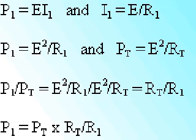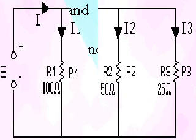We can determine the relationship of power dissipated by any one resistor to the total power dissipated by all the resistors as follows. Since P1 equals E times I1, and I1 equals E divided by R1, then P1 is equal to E squared divided by R1, and the total power is equal to E squared divided by the total resistance. Therefore, P1 divided by the total power is equal to total resistance divided by R1, or further simplifying, P1 is equal to the total power times the total resistance divided by R1.